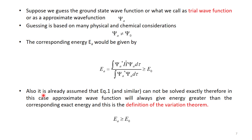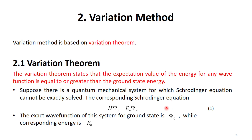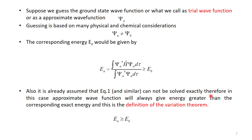It is already assumed that the Schrödinger equation cannot be solved exactly. Therefore, in this case, the trial wave function will always give an energy greater than the corresponding exact energy. This is the definition of the variation theorem: if we select a trial wave function, it will always have an energy greater than the ground state energy, and it can be equal only if the trial wave function is exactly the ground state wave function.